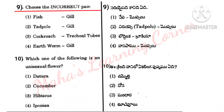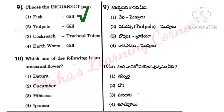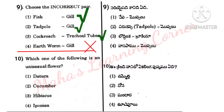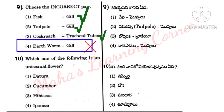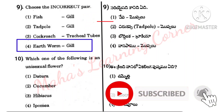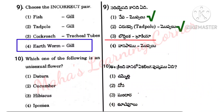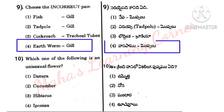Question: Choose the incorrect pair regarding respiratory organs. Options: Fish — Gills (correct); Tadpole — Gills (correct); Cockroach — Tracheal Tubes (correct); Earthworm — Skin respiratory organ, not Gills (incorrect pair). So Option 4 is the correct answer.